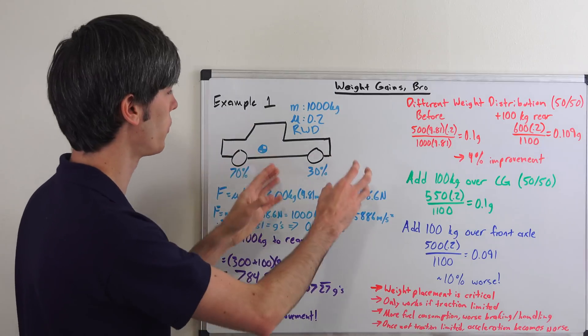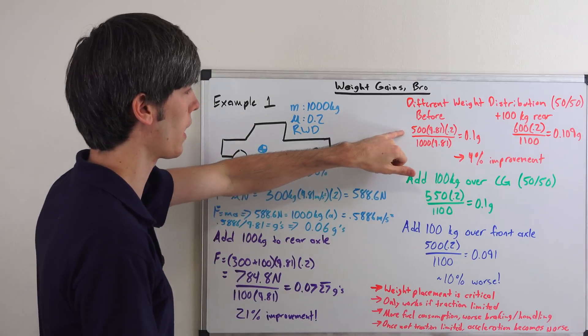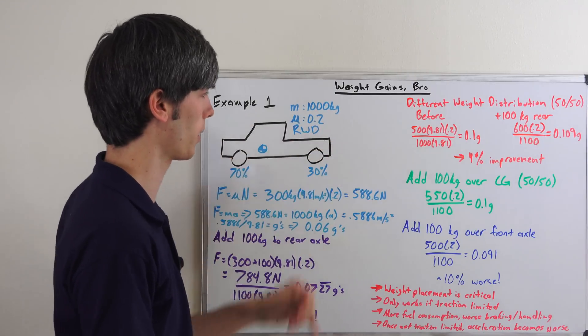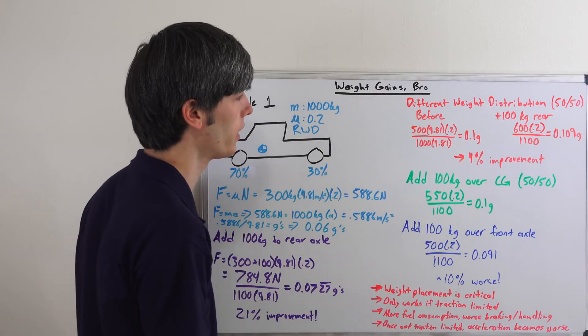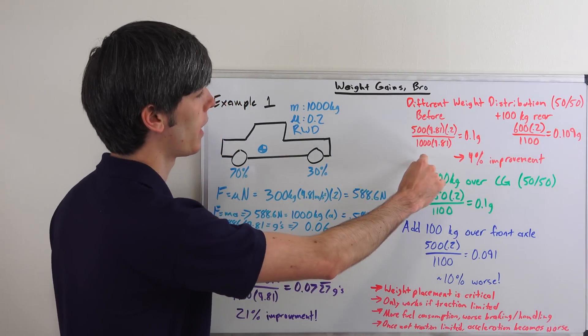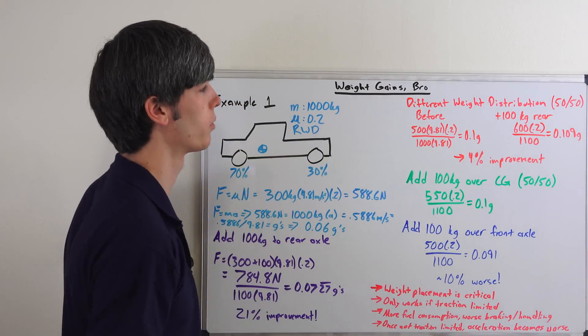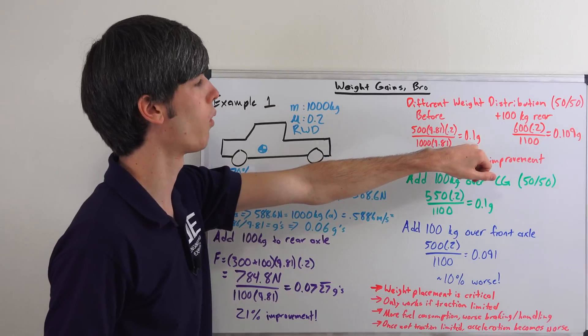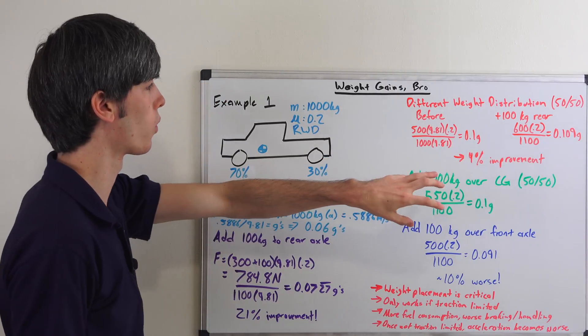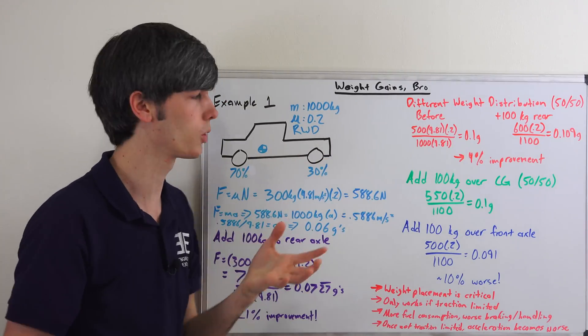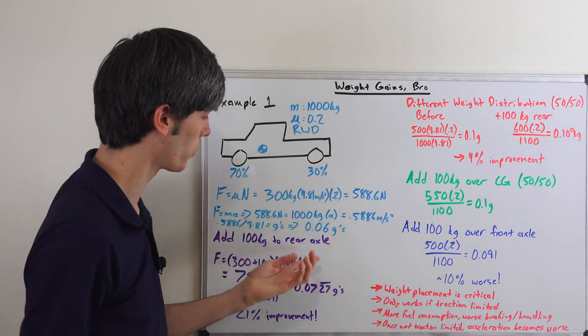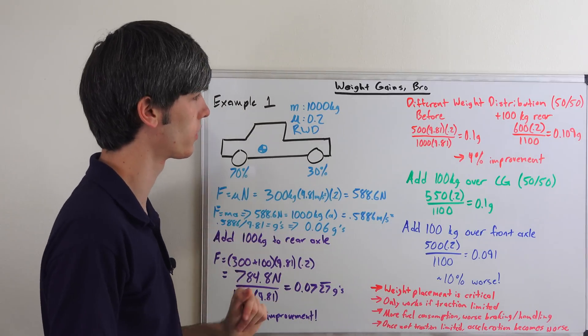So now we're going to say it's a 50-50 weight distribution, same mass. So we've got 500, half of a thousand kilograms, times 9.81 times 0.2 divided by the mass of the vehicle a thousand times 9.81 and that gives us 0.1 g. So the maximum force that we could accelerate if this vehicle had a better weight distribution would be 0.1 g which is as you can see higher than these previous examples.